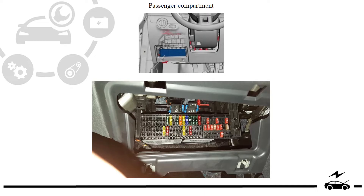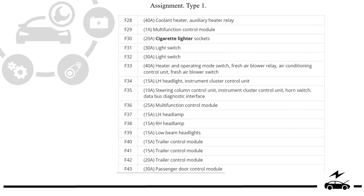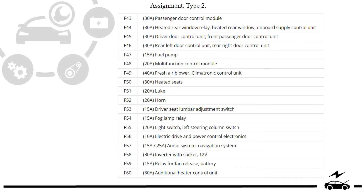Passenger compartment fuse box: location, diagram, assignment type 1, assignment type 2.